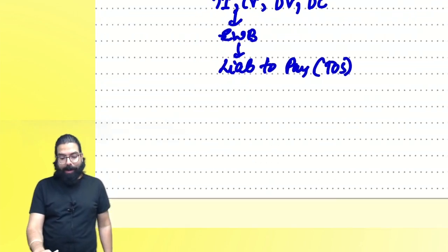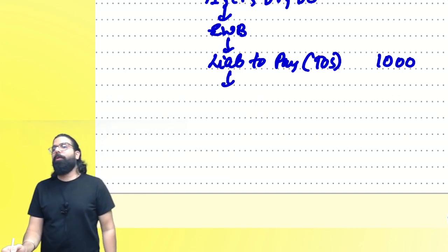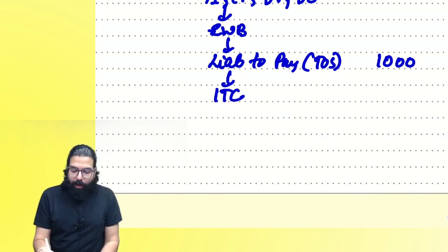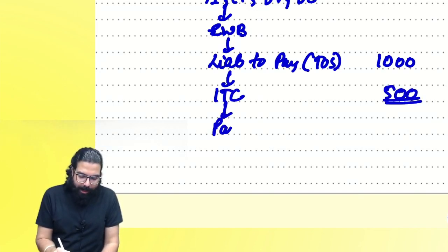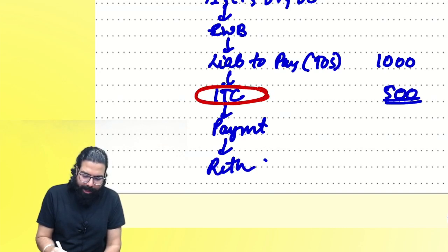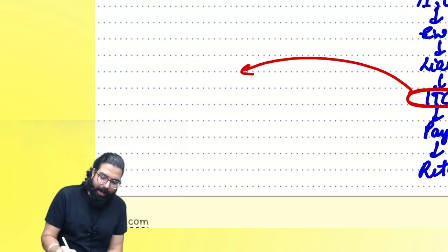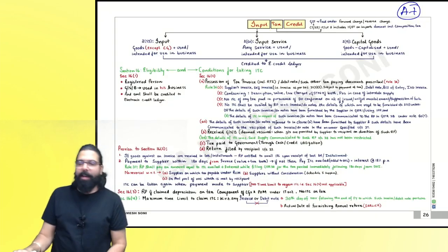Once the e-way bill is issued, liability to pay comes at the time of supply. Suppose my liability is ₹1,000 — I will use my input tax credit. For example, I have ₹500 in input tax credit; the remaining amount I'll pay, then file my return. So now we are going to learn about input tax credit — Section 16, Section 17, and Section 18.